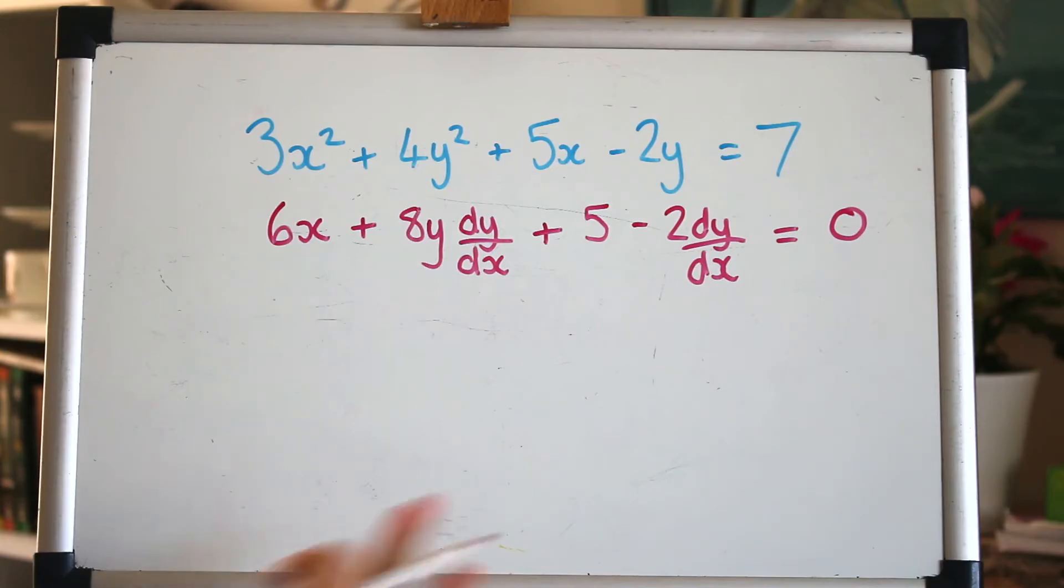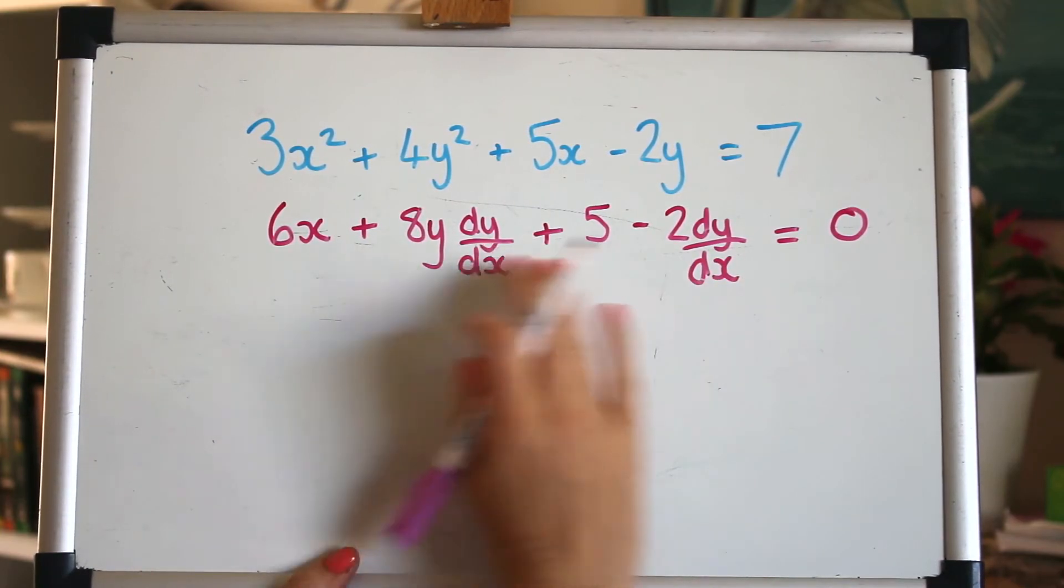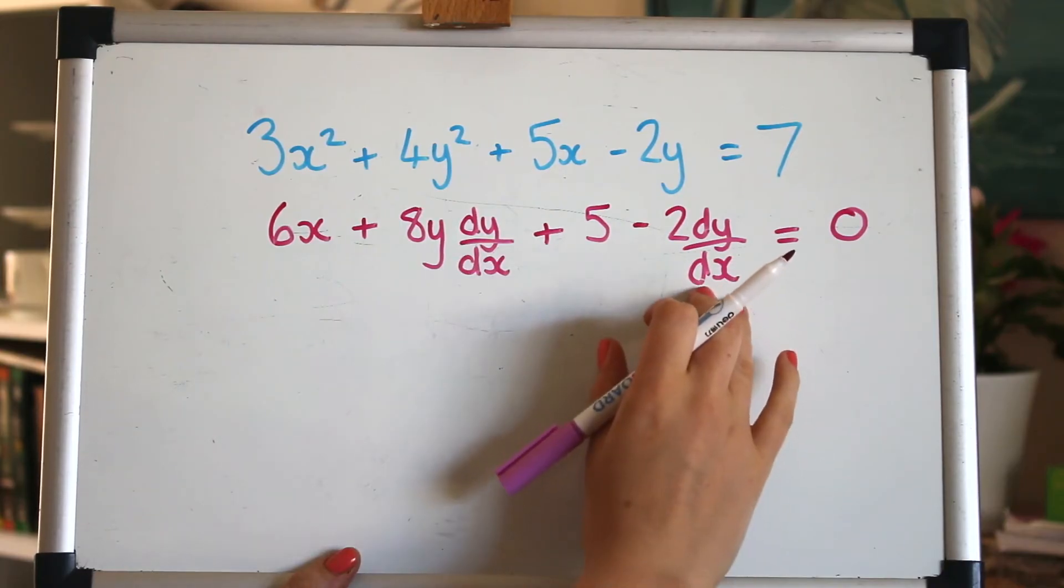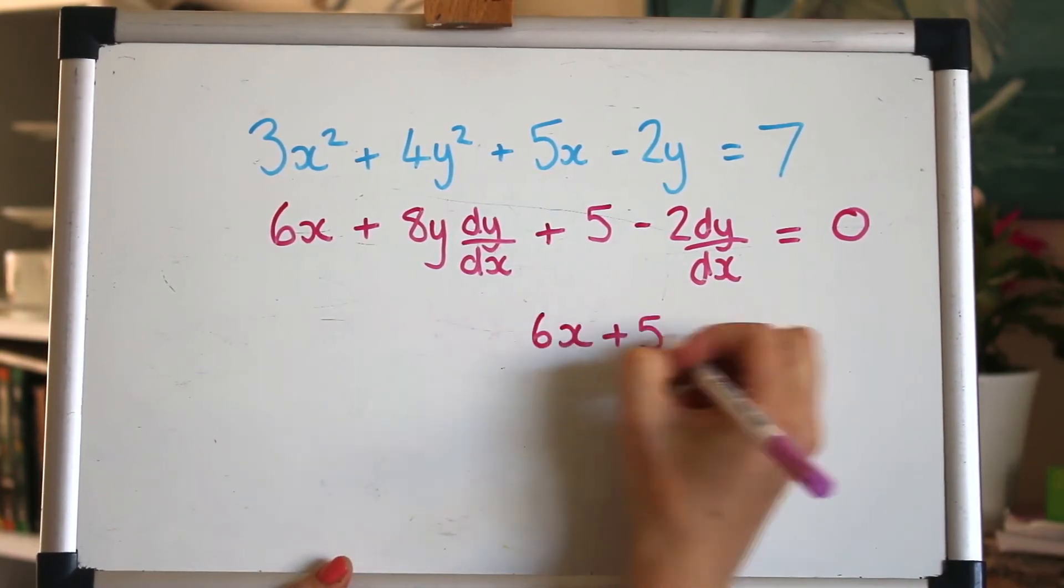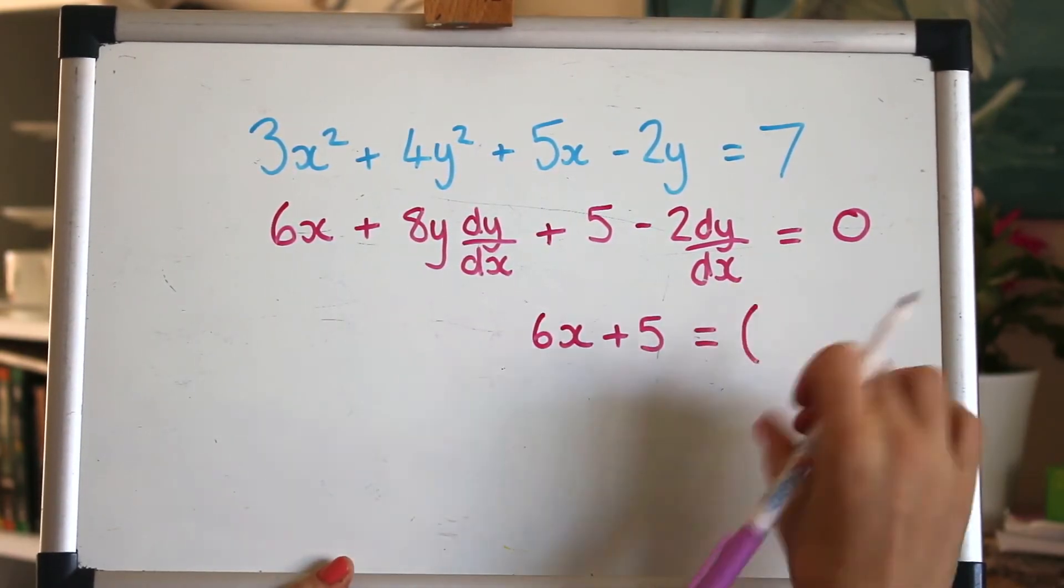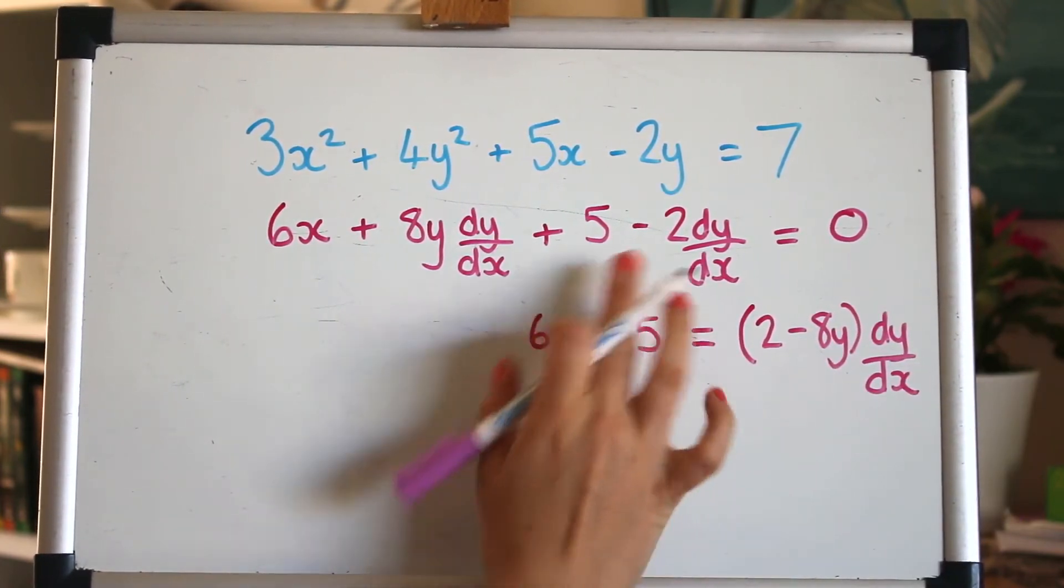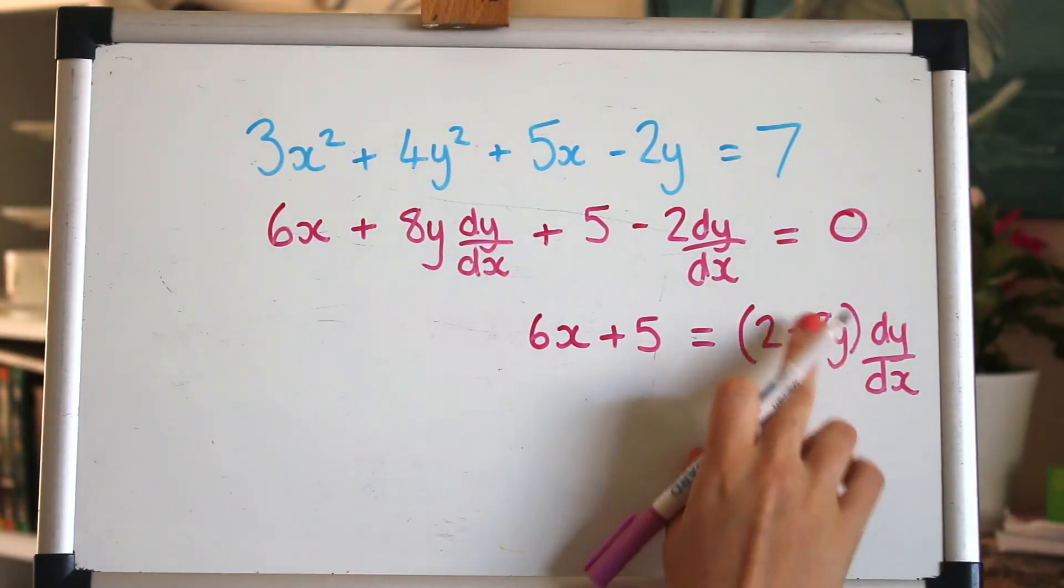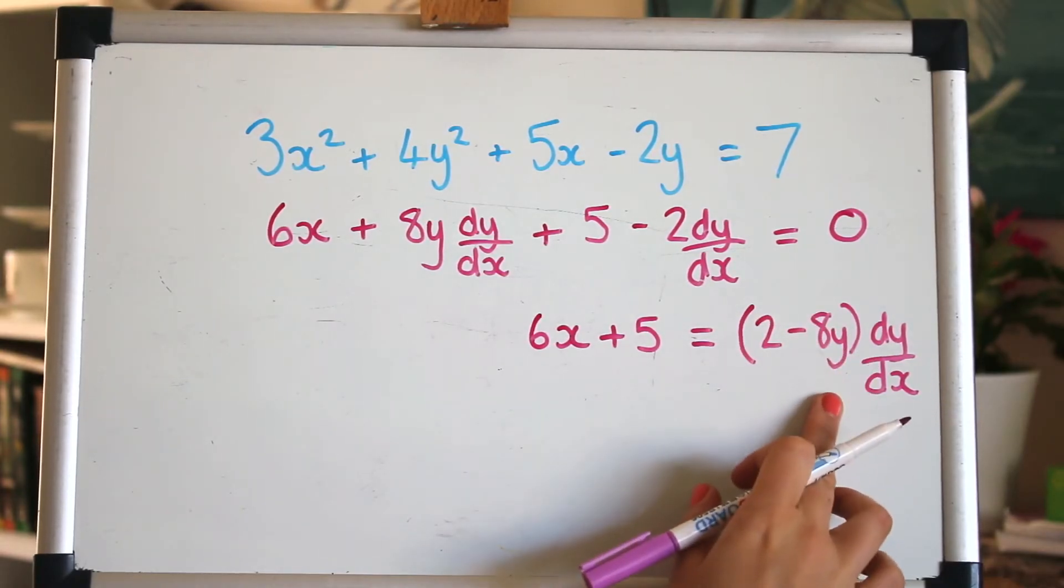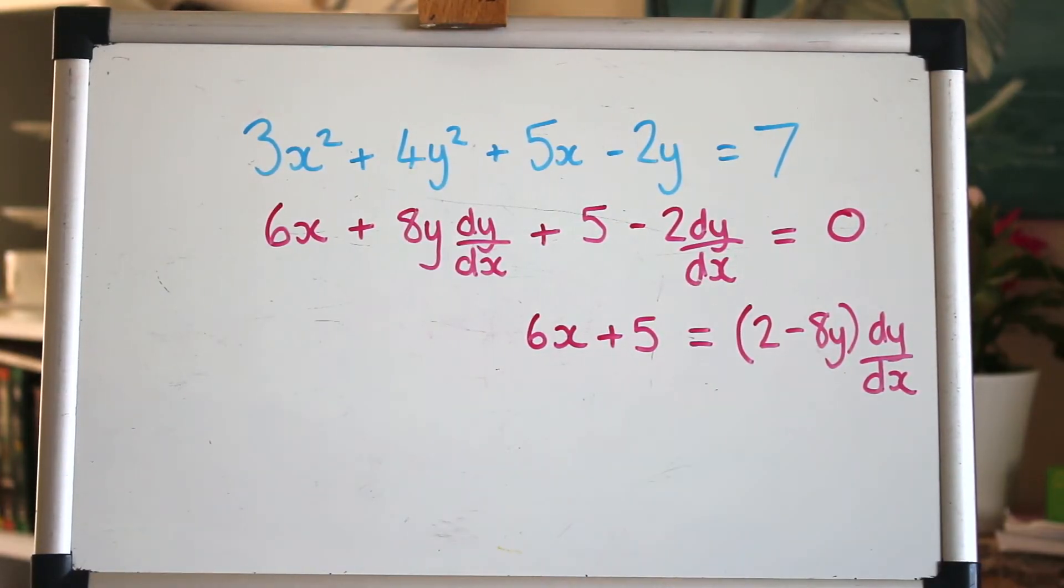Now we're used to having dy by dx on its own on one side of the equation and that's a nice neat way of writing it. So let's try and do that. So we'll get these two terms of dy by dx on together on one side and everything else on the other. So you might have done that differently to me. I brought these two terms over to the right hand side so it will be positive 2 and negative 8y and I factorised that. I've brought those over to this side because I didn't want loads of negatives here but obviously you can do it the other way around if you want.